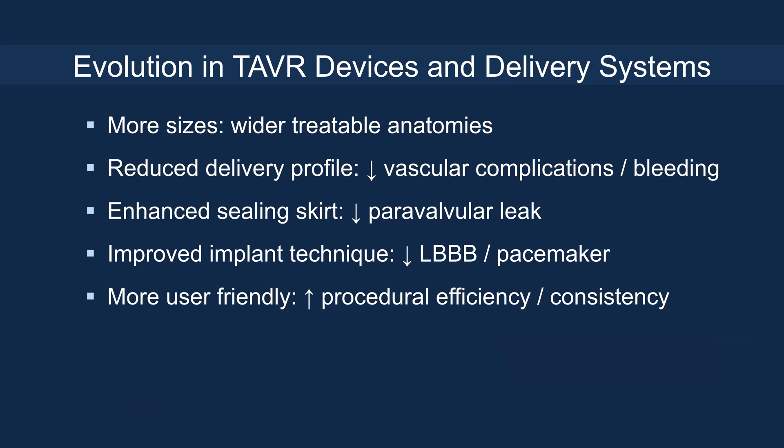Since then, there's been a significant evolution in TAVR devices and delivery systems. More sizes are available to treat wider anatomies. There's reduced delivery profile, meaning reduced vascular complications and bleeding. There's enhanced sealing skirt, meaning reduced paravalvular leak. There's improved implant technique, meaning left bundle branch block and pacemaker rate has gone down. And finally, the device is more user-friendly, increasing procedural efficiency and consistency.